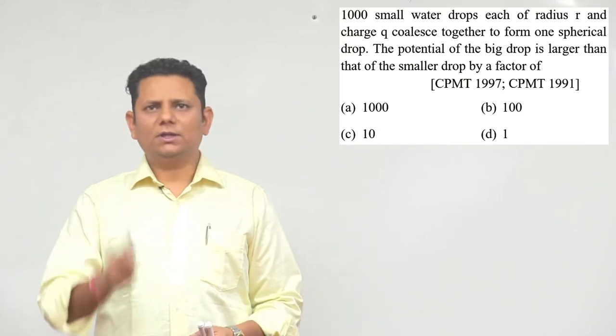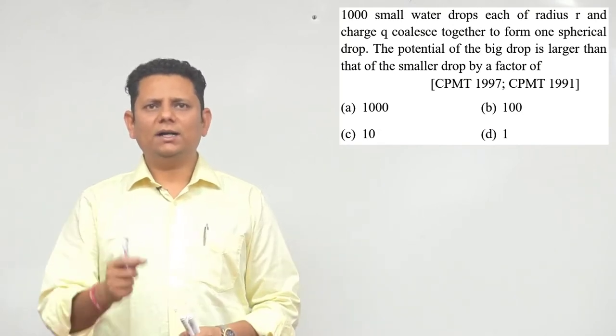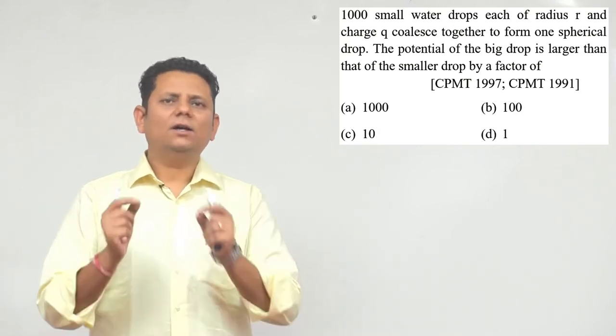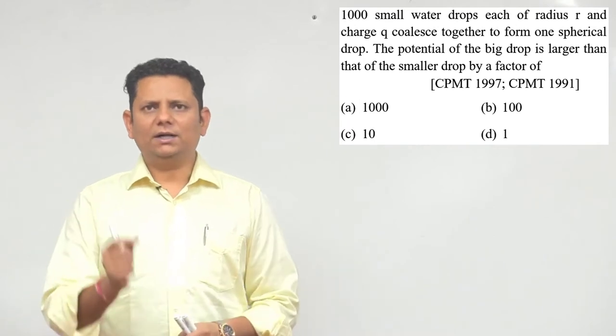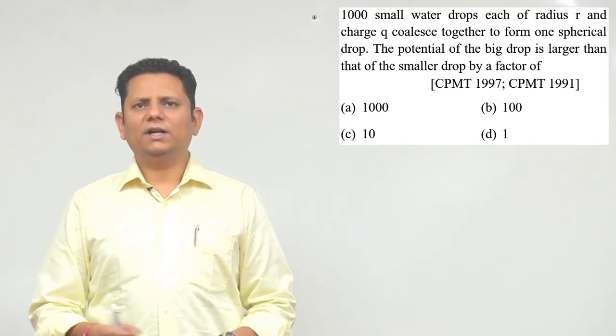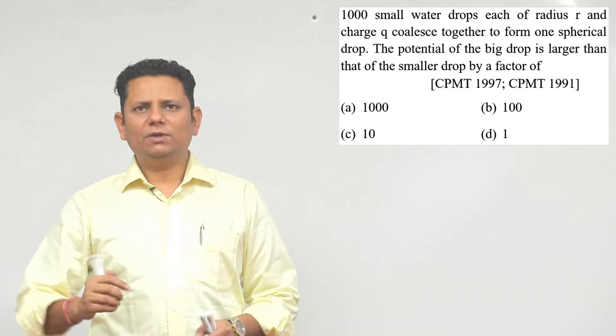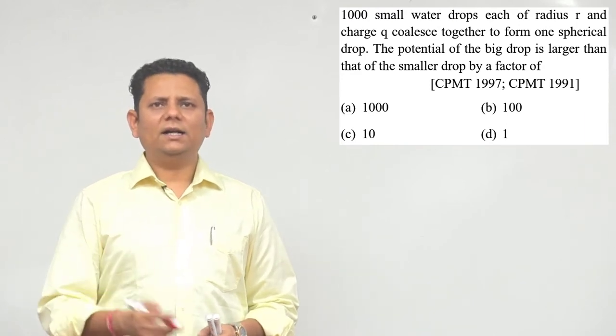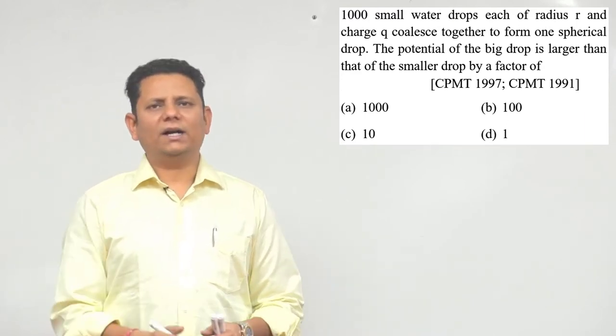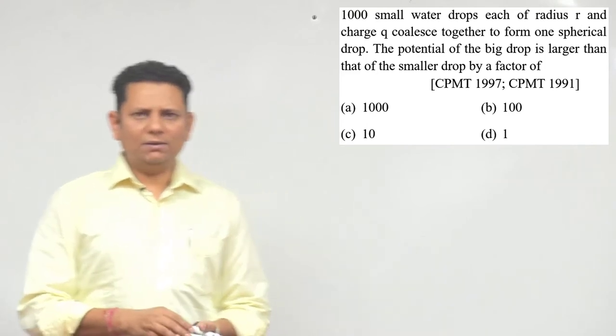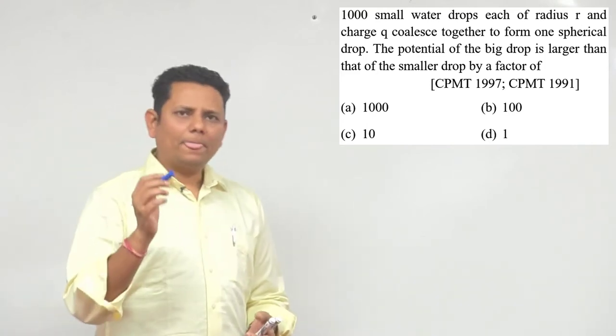Next question. The question says: 1000 small water drops, each of radius r and charge q, coalesce together to form one spherical drop. The potential of the big drop is larger than that of the smaller drop by a factor of how many? Let's compare the potentials now.